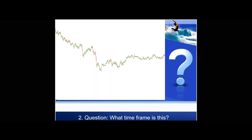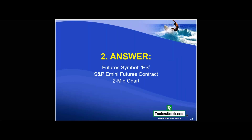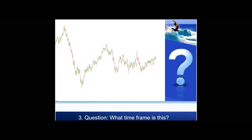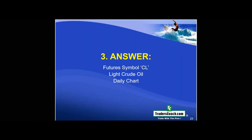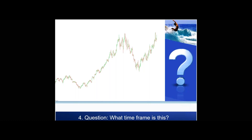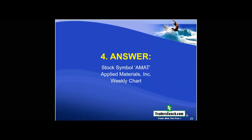Let's look at another one — what time frame is this? Tough to tell. This is the ES market, the S&P E-mini contract on a two-minute chart. And this one? Impossible to tell — this happens to be the light crude futures market on a daily chart. And this one is Applied Materials on a weekly chart. The idea is that these patterns could apply to any market in any time frame.